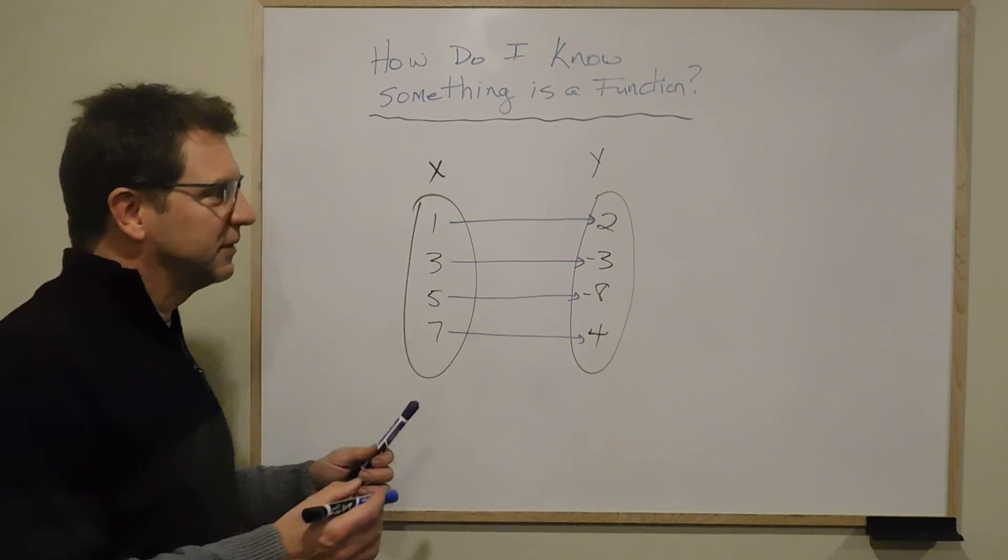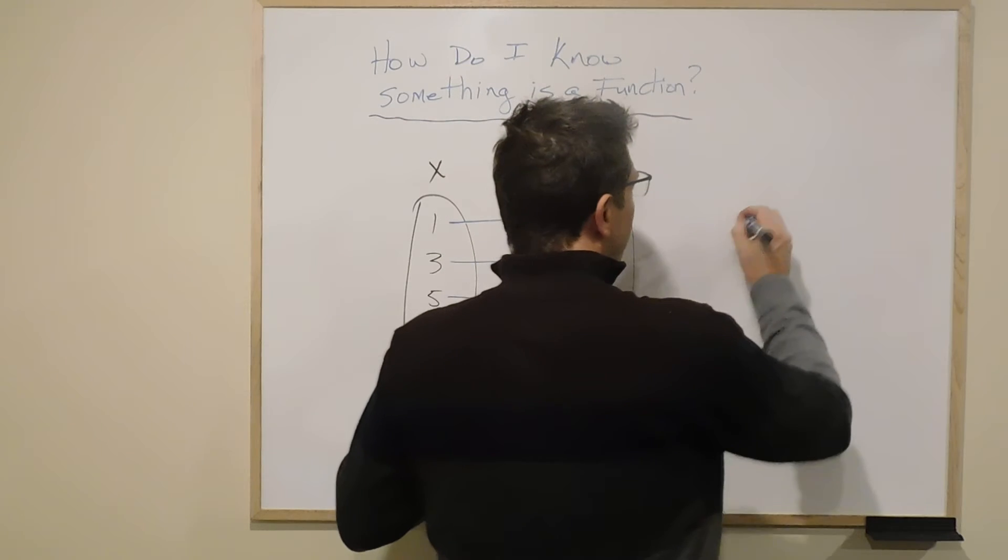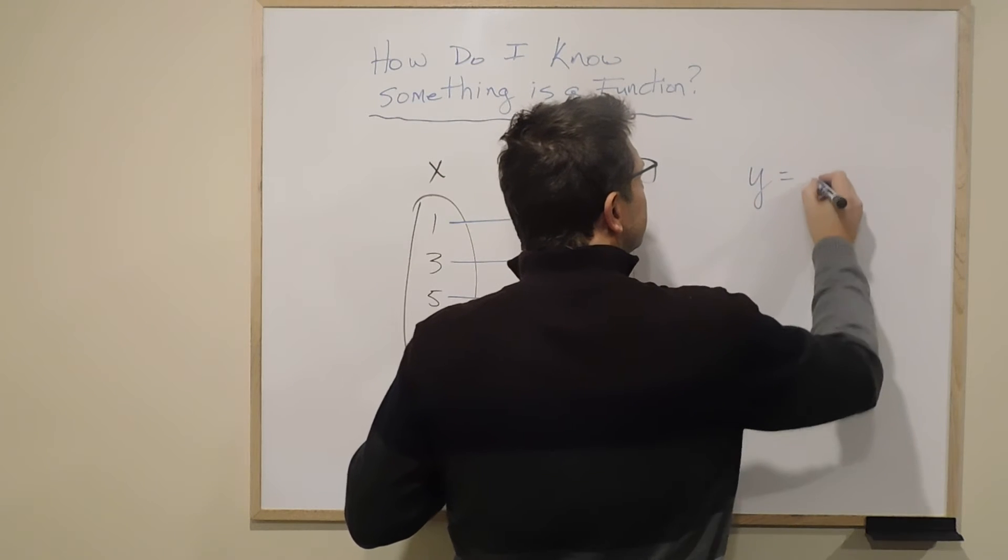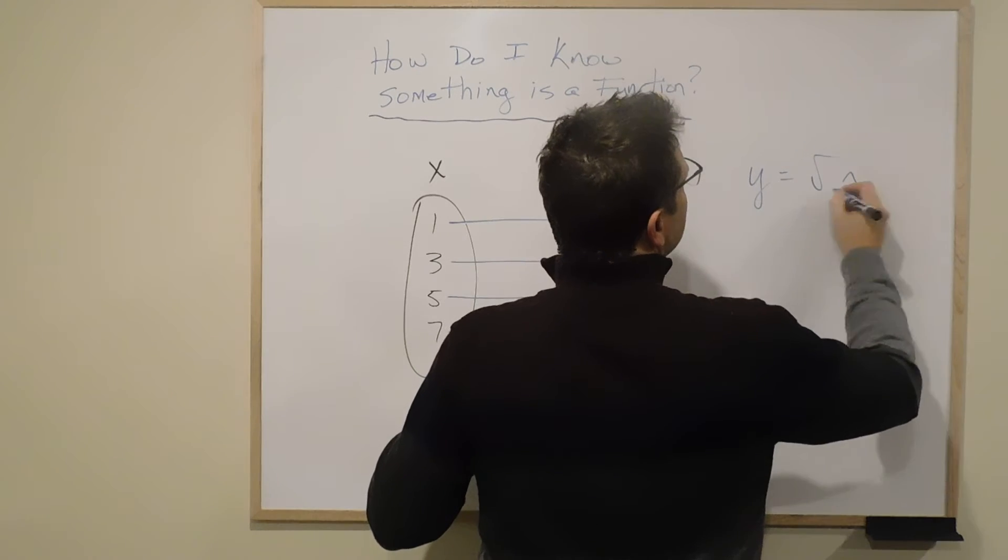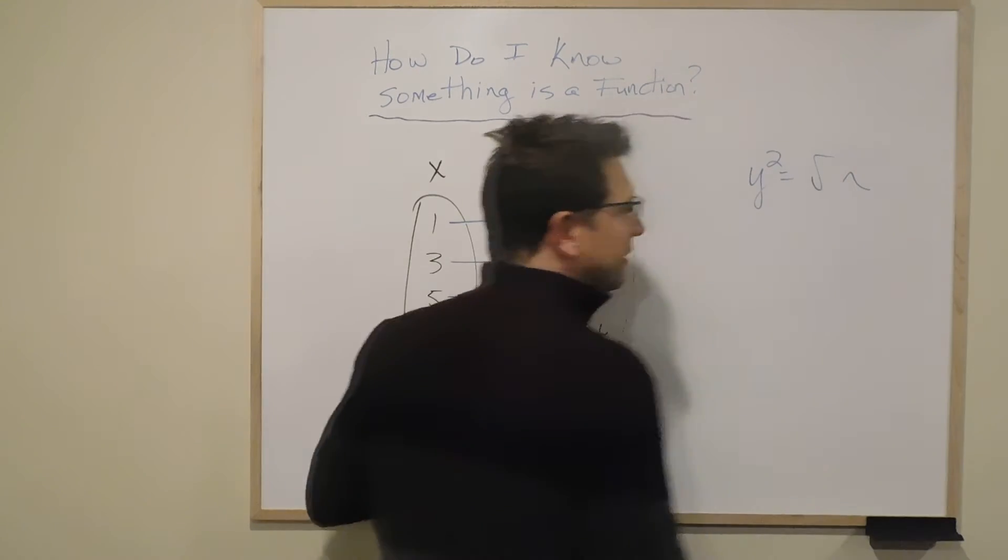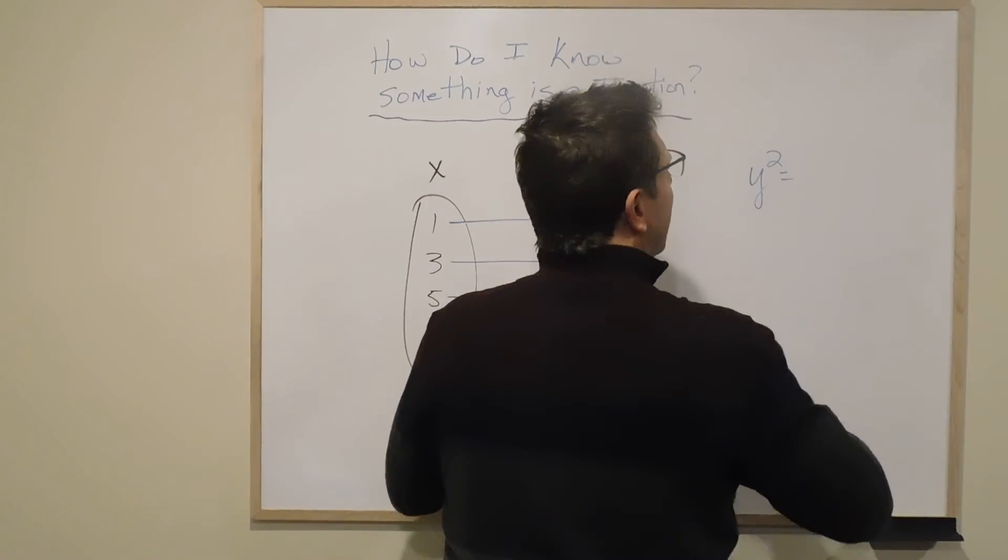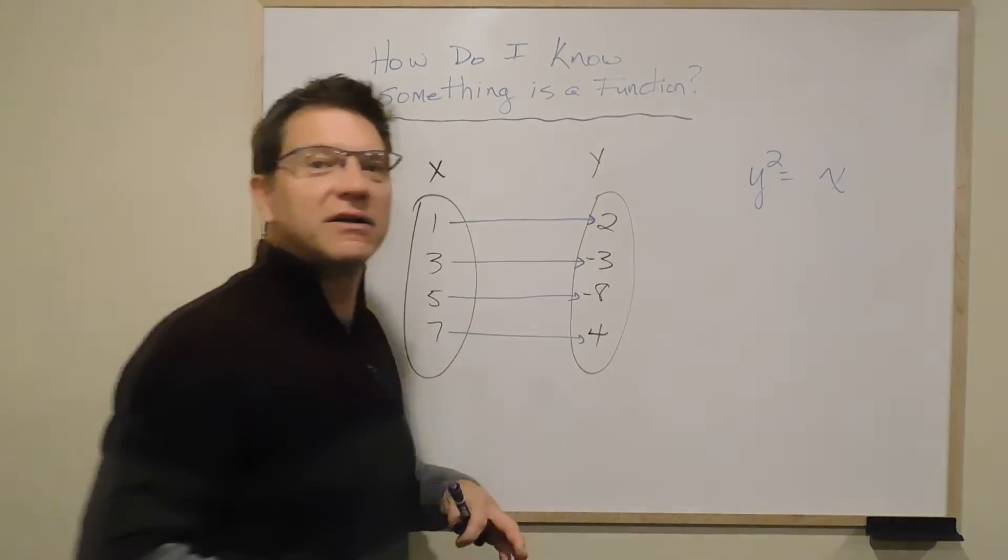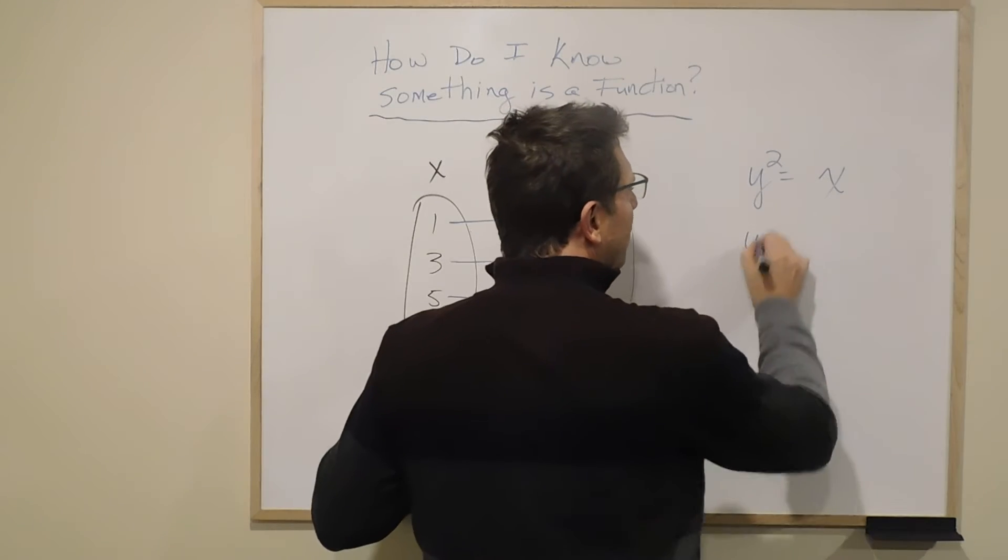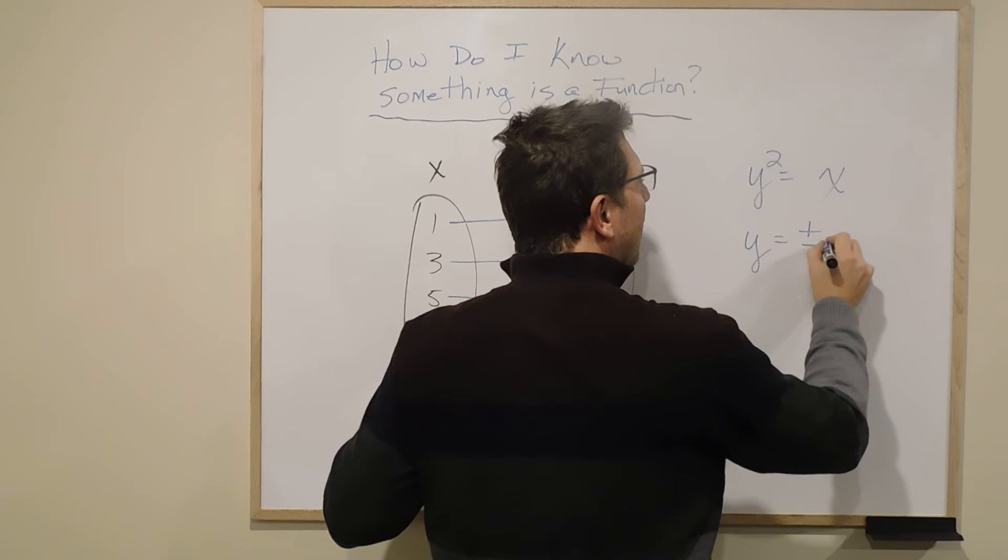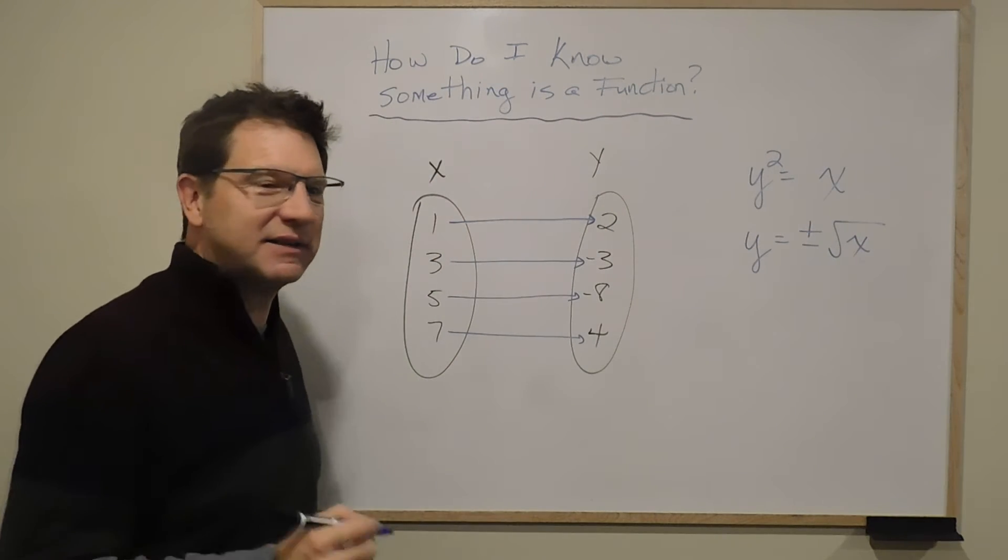So let's say y squared, let's do it a little differently. y squared is equal to x. Let's look at it this way. y squared is equal to x. Now, if I solve for y, I know y is equal to plus or minus x.